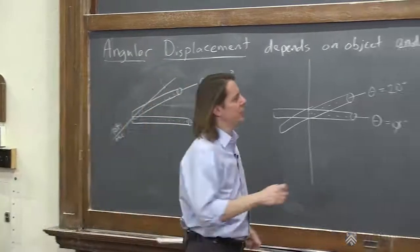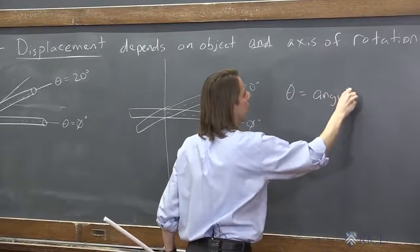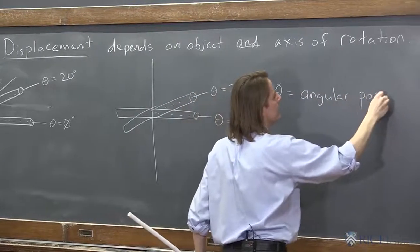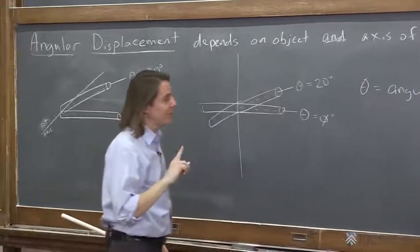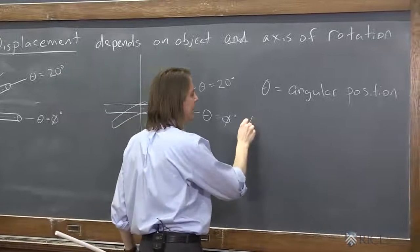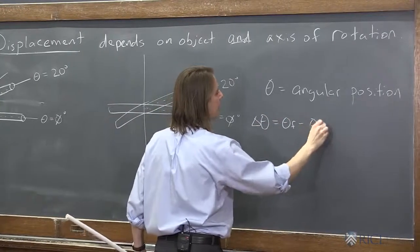So let's look at the quantities we used. We talked about theta, which is the angular position. But that's not the displacement. Remember, displacement is always a change, right? So delta theta is theta final minus theta initial.